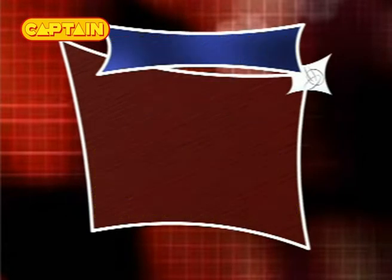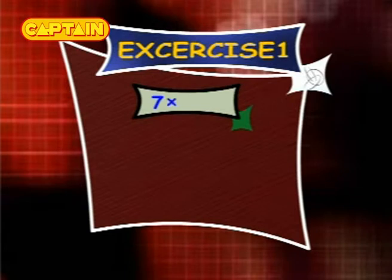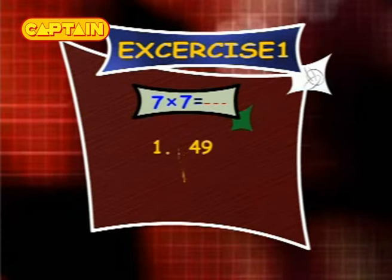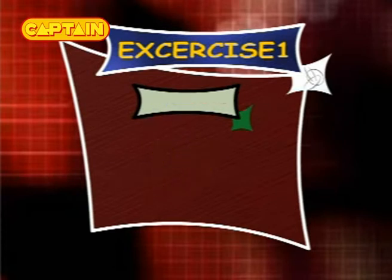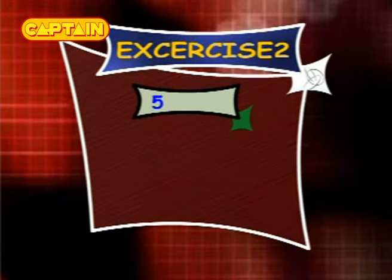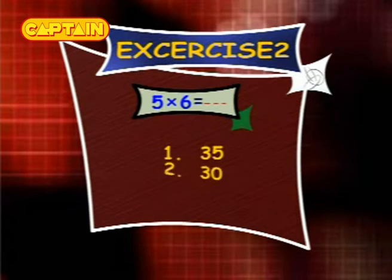Exercise 1: 7×7 equals — options are 49, 39, 7. Exercise 2: 5×6 equals — options are 35, 30, 28.